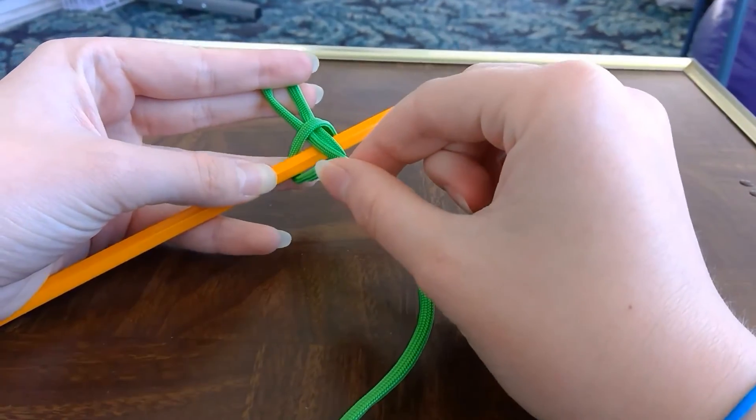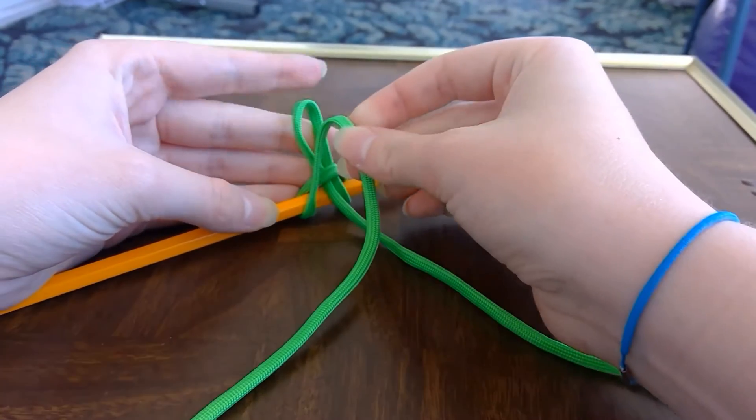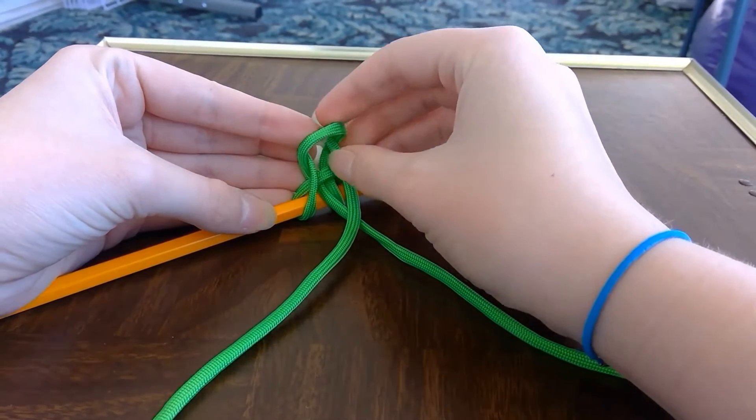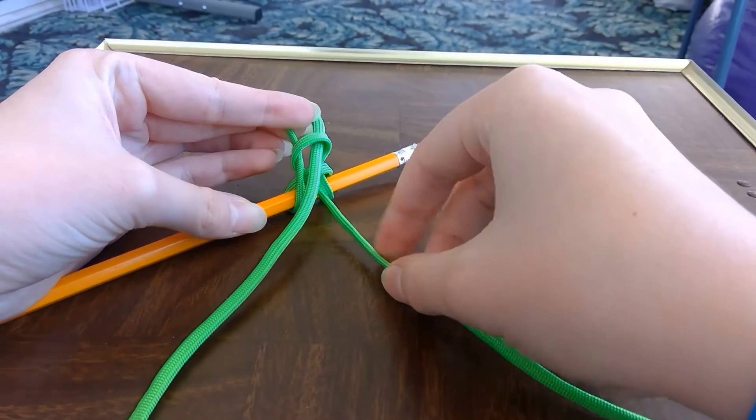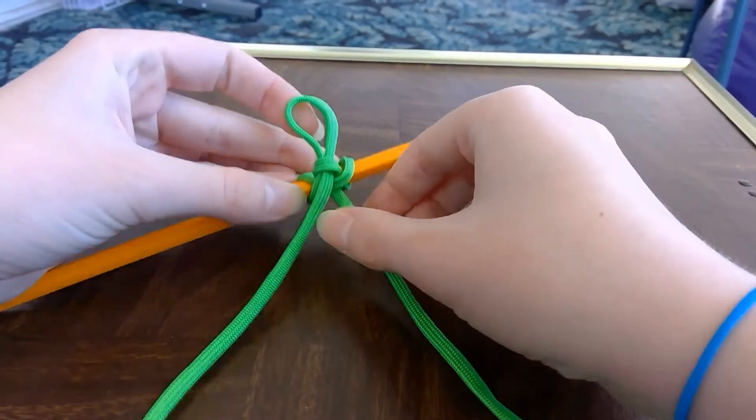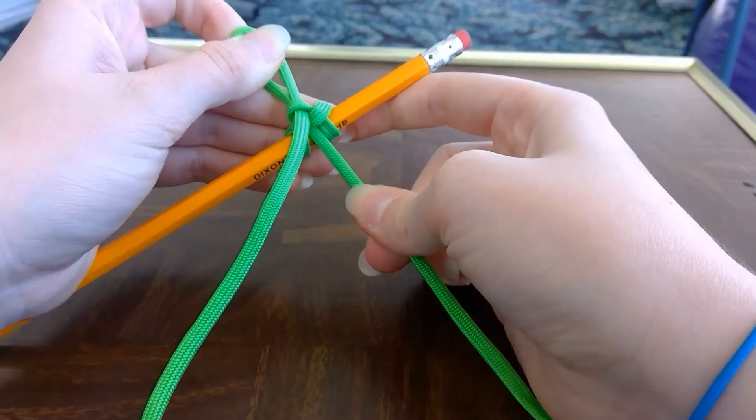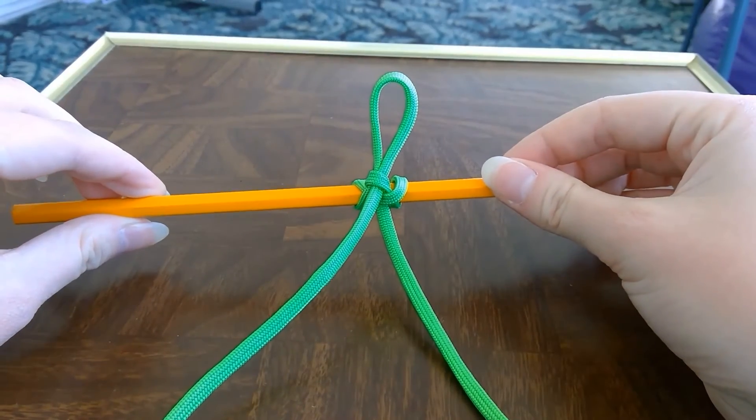Then you're going to take the other end, push it through the second loop in another loop, and then pull the second loop tight. And that's the highwayman's hitch.